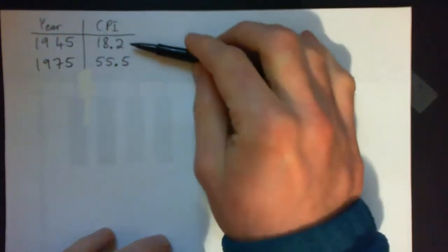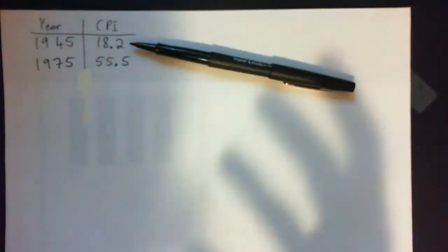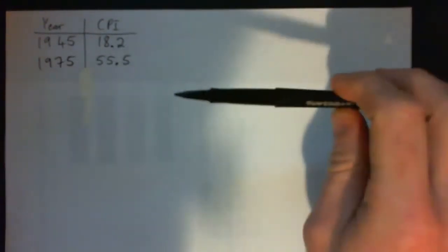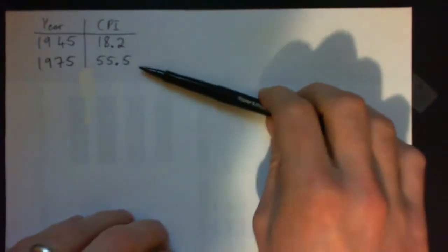Hi everyone, I'll just go over this problem with you if you're stuck. The CPI is the consumer price index. A typical basket of not just groceries but all sorts of consumer products is valued at $18.20 in 1945. Those same similar group of products would be valued at $55.50 in 1975.